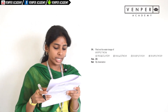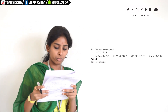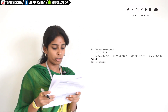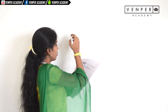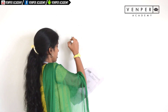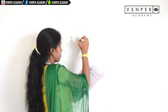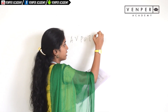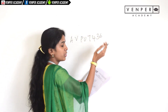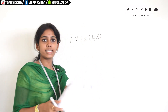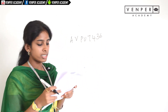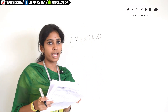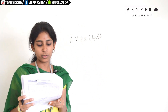Question fourteen: find the water image of A, V, P, U, 7, 4, 3, 6. Just invert it and see what image you get. The option is A, and it is determined by observation.